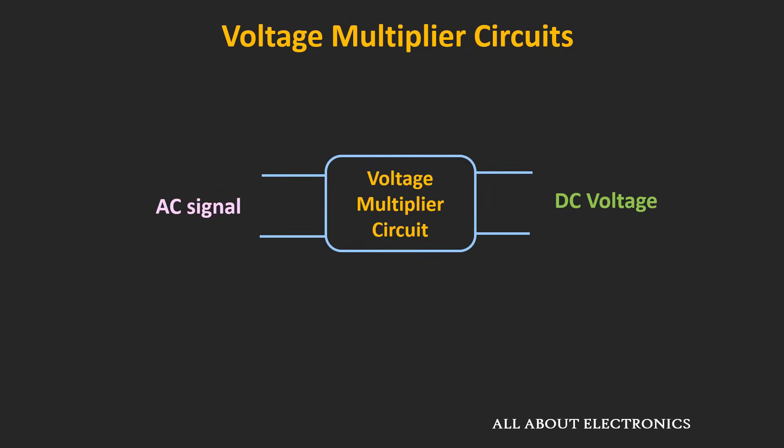As its name suggests, this voltage multiplier circuit multiplies the input signal. Usually the input to this multiplier circuit is an AC signal, and like a rectifier, the output is a DC voltage. But unlike the rectifier circuit, the magnitude of the DC signal is n times the input signal.